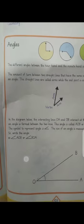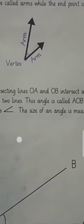The symbol to represent an angle is ∠. The size of an angle is measured in degrees. We write the angle as angle AOB or angle BOA.